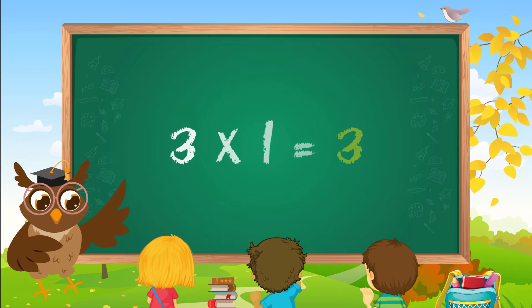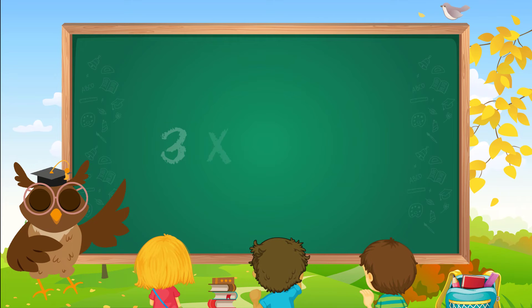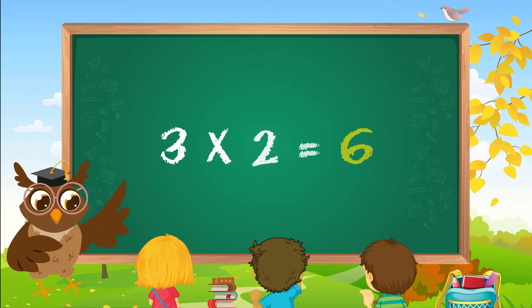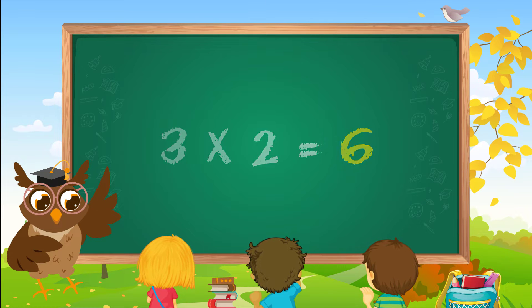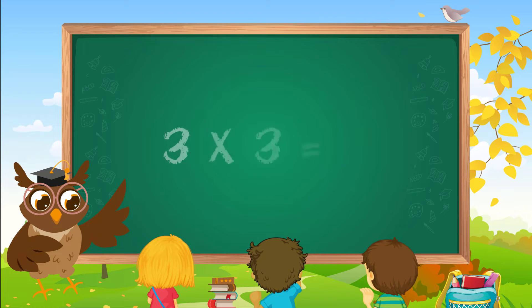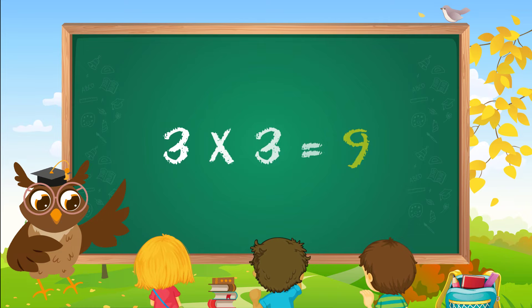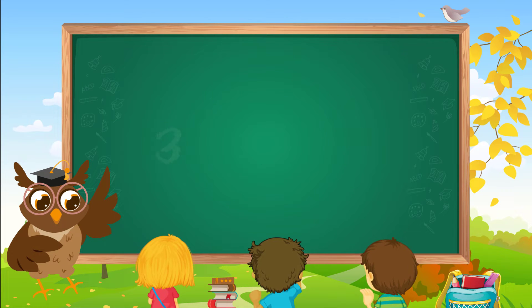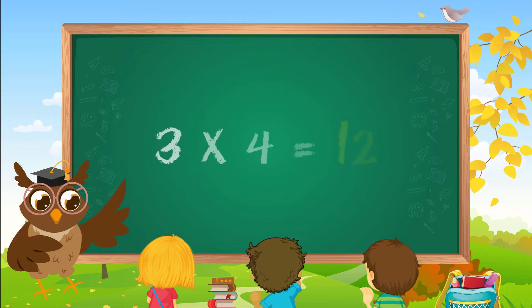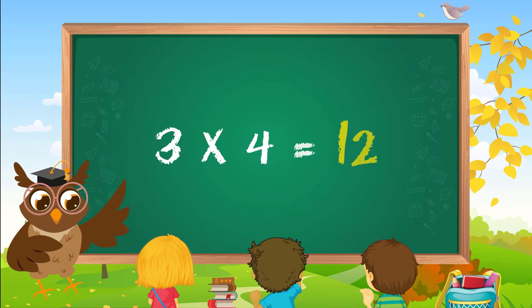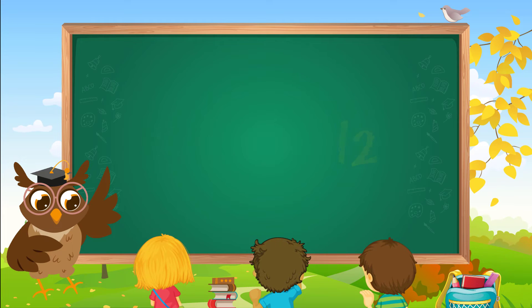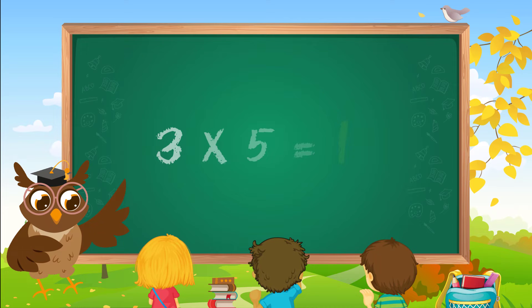Three ones are three. Three twos are six. Three threes are nine. Three fours are twelve. Three fives are fifteen.